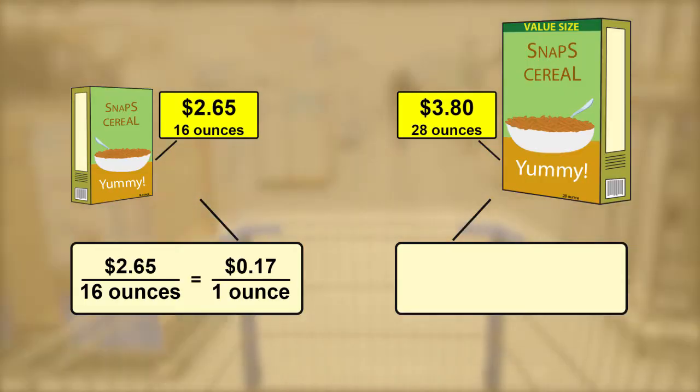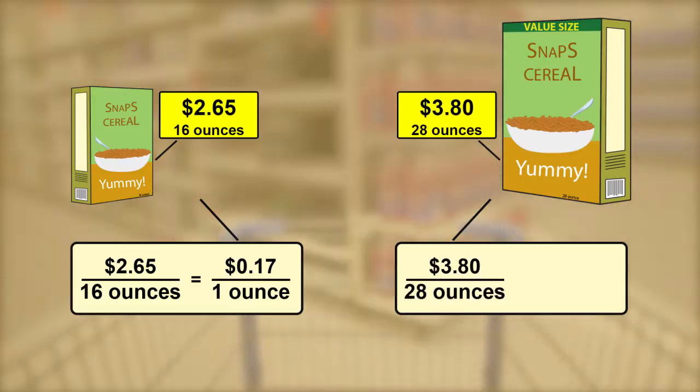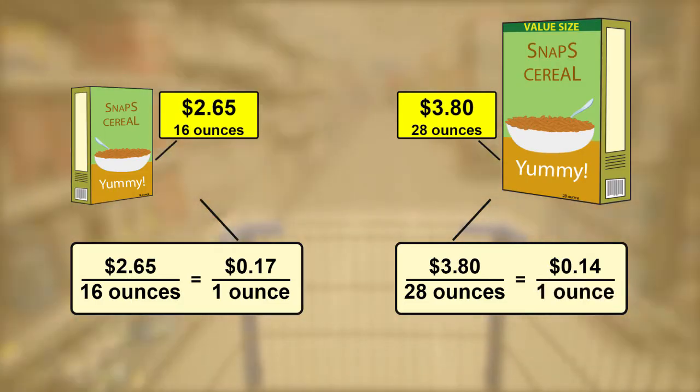The unit price for the larger box is $3.80 divided by 28 ounces. This equals 14 cents per ounce. Even though the smaller box is on sale, the value size box is still the better deal.